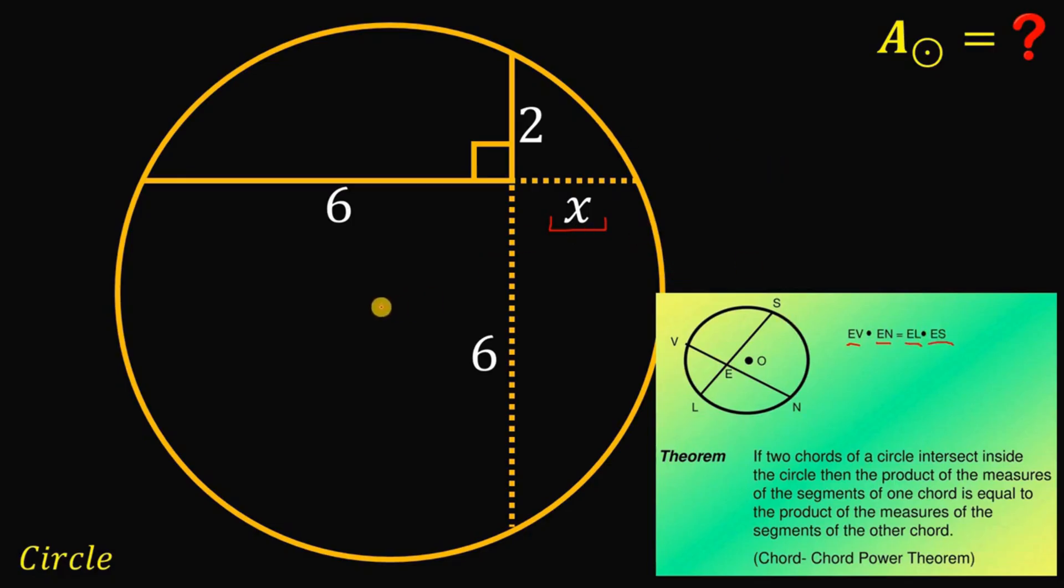we can say that ev multiplied by en must be equal to el multiplied by es. So, using this theorem to our given circle, we can say that 6x equals 6 times 2 or 6 multiplied by x must be equal to 6 multiplied by 2.